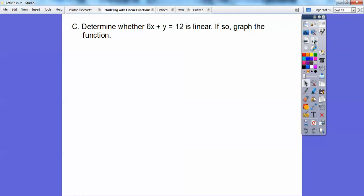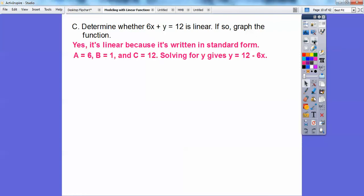So determine whether 6X plus Y equals 12 is linear. If so, graph the function. Yes, it's in standard form, AX plus BY equals C. So A is six, B is one, and C is 12.